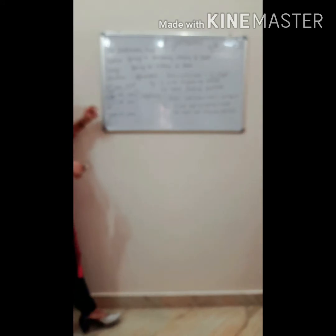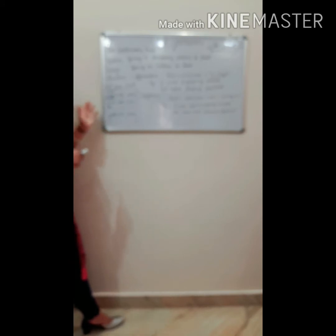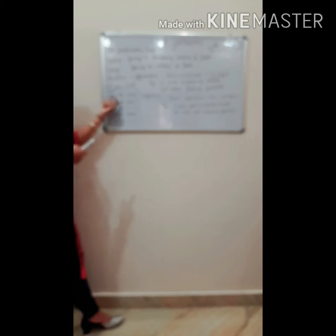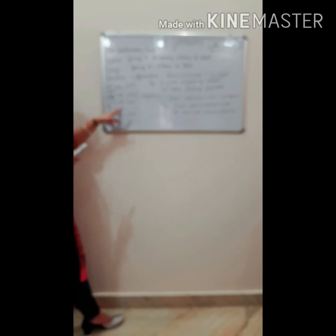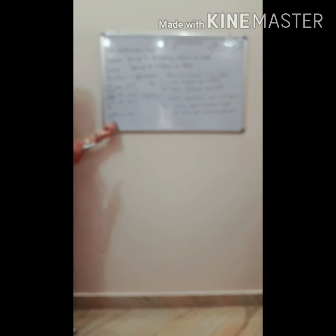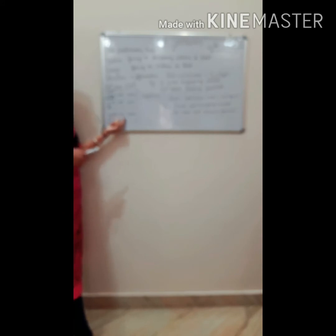Let us look at the table for usage of 'was' and 'were'. With first person singular — like 'I' — we use 'was': I was dancing, I was eating, I was watching a movie. With first person plural, we use 'were': we were watching a movie, we were dancing. For second person, in both singular and plural cases, we use 'were': you were dancing.